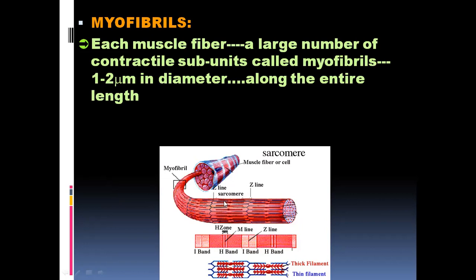The muscle cell is made up of alternating lighter and darker regions. The light region is called the I band and the dark region is called the A band. The I band is made up of a protein called actin and is known as the thin band. The darker A band is made up of a protein called myosin and is known as the thick band. Within the A band there is a slightly lighter region called the H zone.